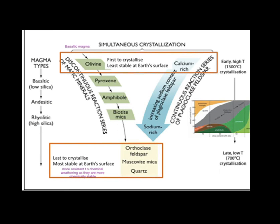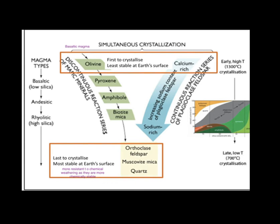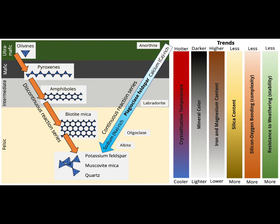Why is the right-hand side called the continuous reaction series and the left-hand side the discontinuous reaction series? On the right-hand side, the minerals formed all belong to only one mineral group — plagioclase — with just exchange of ions between them, so there is not much change in chemical composition and atomic structure. Hence it is called the continuous reaction series. On the left-hand side, olivine is very different from pyroxene, and pyroxene is also different from amphibole — the mineral itself changes, and both atomic structure and chemical composition change significantly. There is a spectacular change among these minerals, so they are called the discontinuous reaction series.